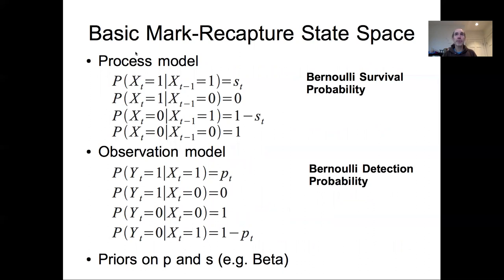So in the most basic form of a mark recapture state space model, instead of having a normal process error and a normal observation error, we actually end up with a Bernoulli process error and a Bernoulli observation error. So what we see is that for the process model, there's four cases. First, if we are alive at the first time point, the probability of being alive at this time point given that we were alive in the previous time point is determined by our survival probability S, assigning a T here to acknowledge that we might ultimately write a model down where that survival probability varies by time.